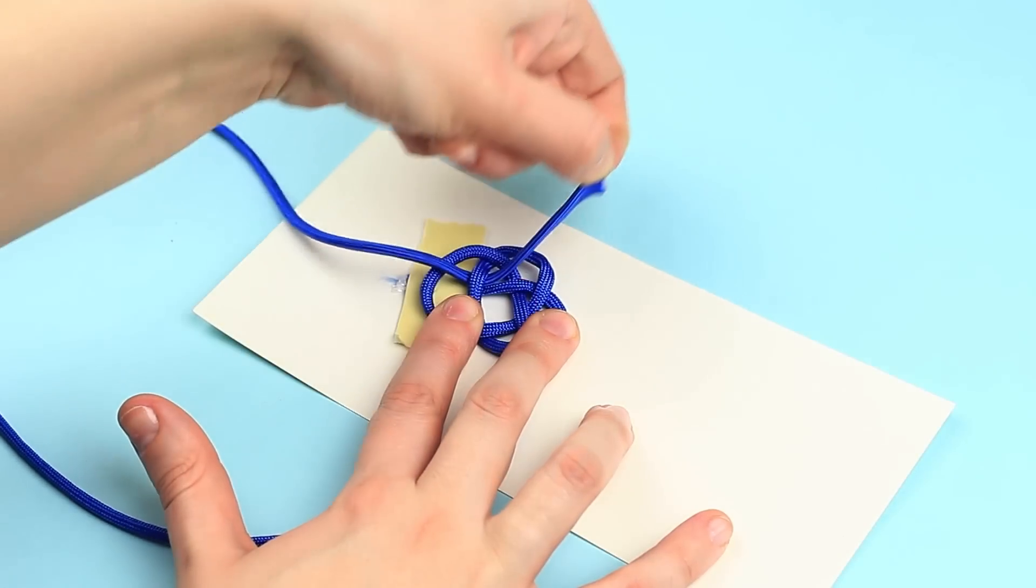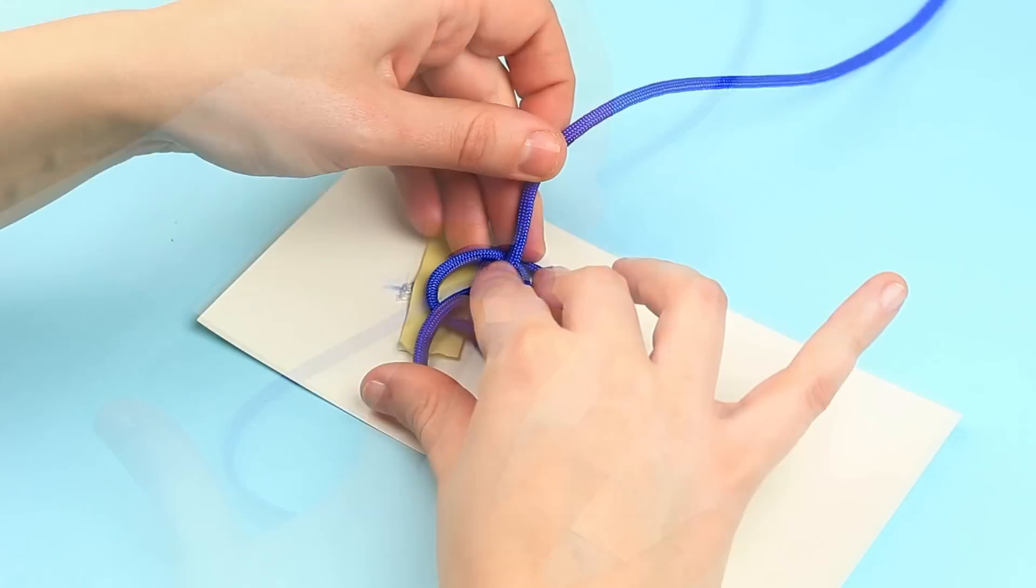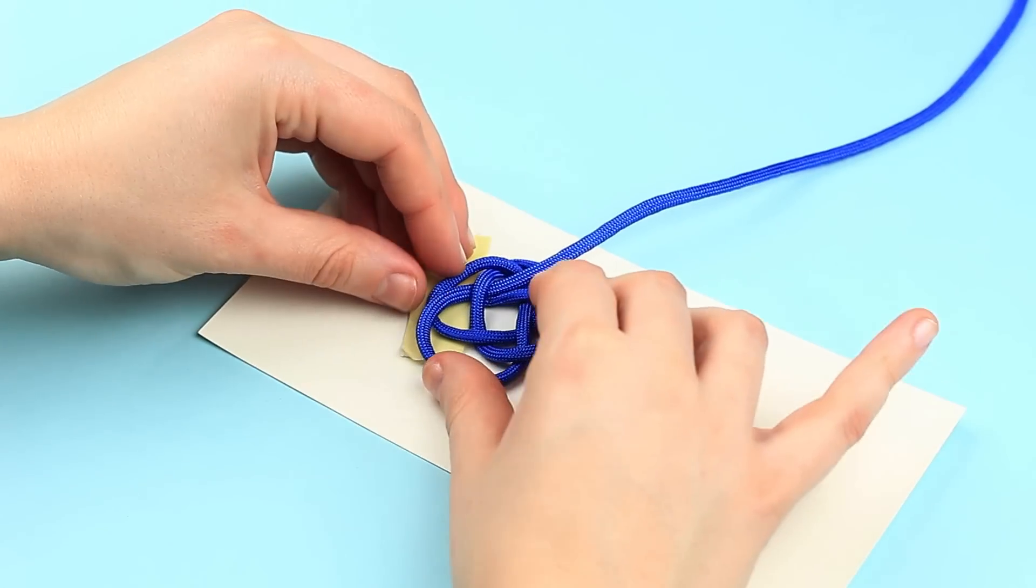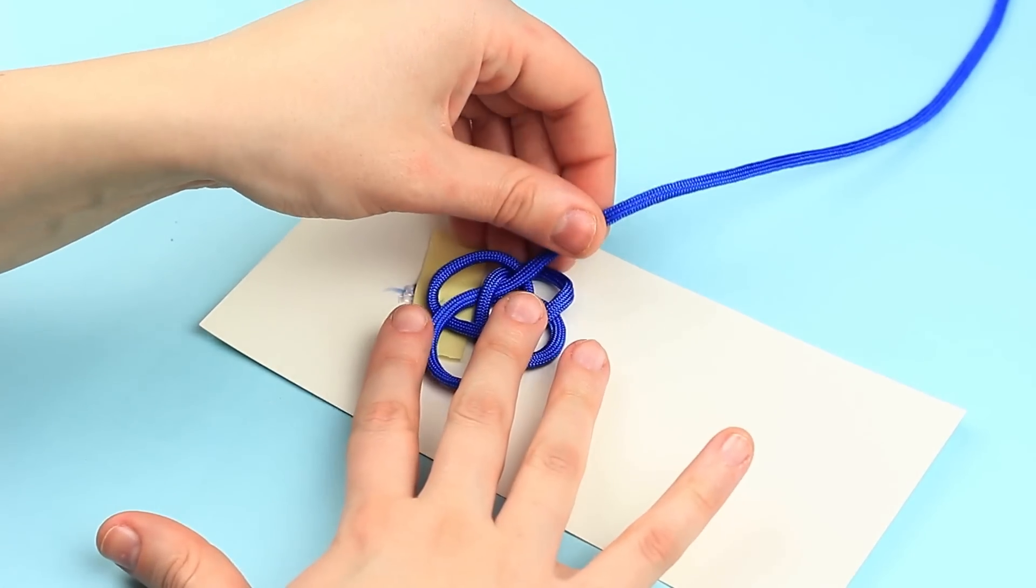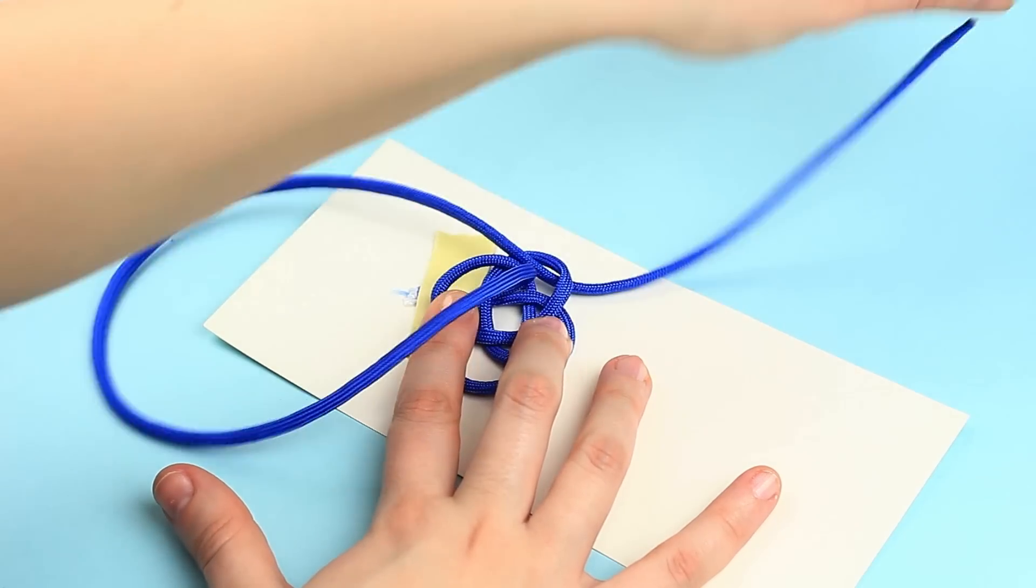Pass the cord through, under the central loop. Now tuck it under the outer curl.